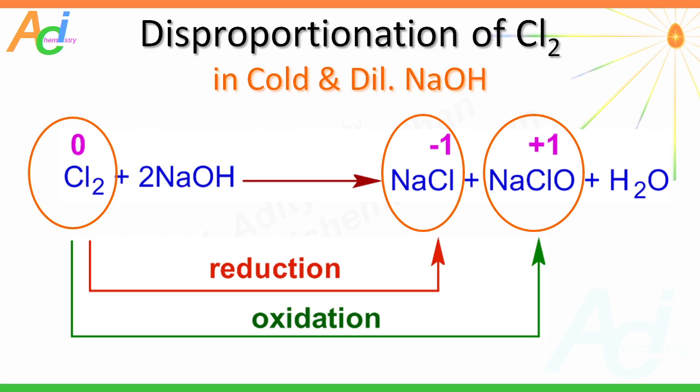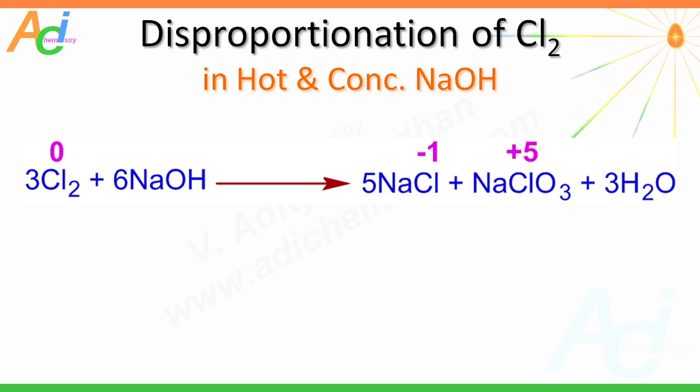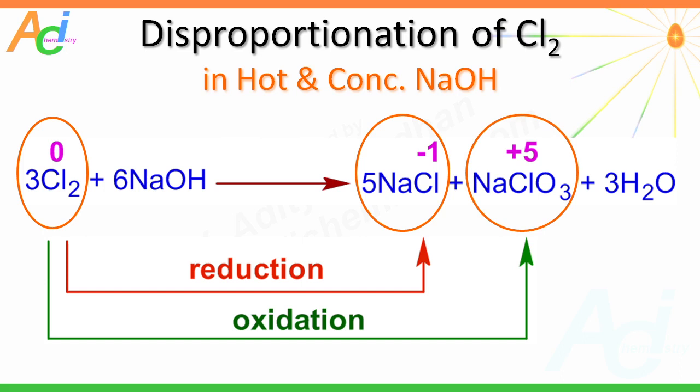However, when the same chlorine gas is passed through hot and concentrated sodium hydroxide, sodium chlorate is formed instead of sodium hypochlorite. In this case, chlorine is reduced to sodium chloride and oxidized to sodium chlorate, in which the oxidation number of chlorine is +5.